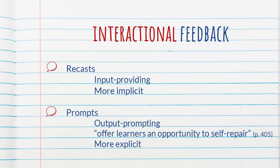A prompt would be something like the teacher asking a question such as, 'Hmm, did you mean this or that?' or maybe, 'Hmm, are you sure about that?' And that way the teacher prompts the learner to self-correct. Recasts tend to be a more implicit type of feedback, whereas prompts are more explicit.